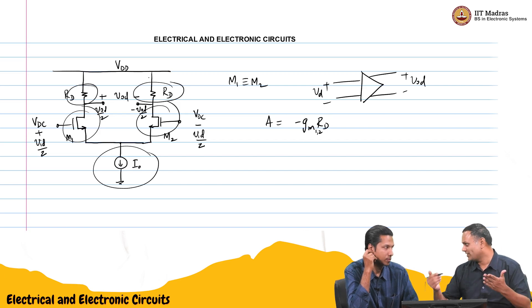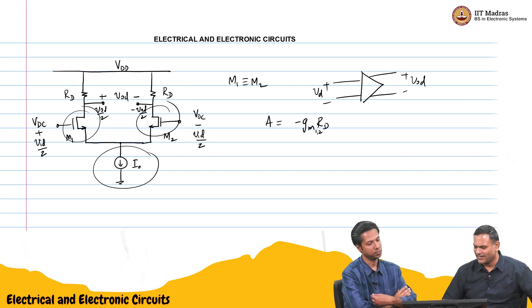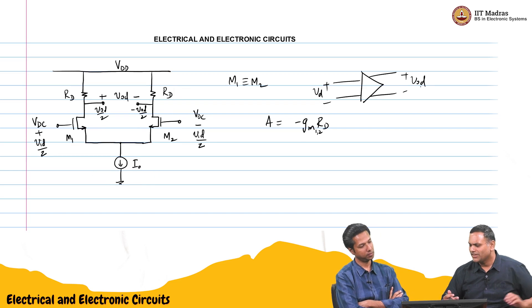Then you know the DC voltages drops across RDs. So, you can find out the DC voltage at the output also. We are interested only in the signal. So, I have only marked plus or minus VOD. You can also find out the DC values. We know all of this. No problem. So, this is straight forward. Very straight forward. Very similar actually to the other one.